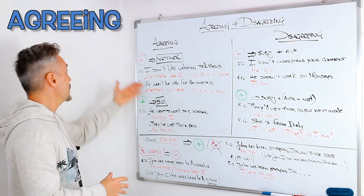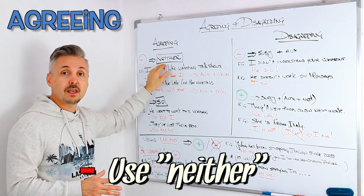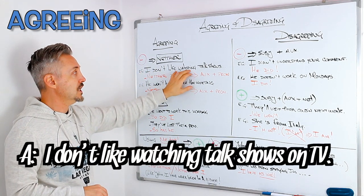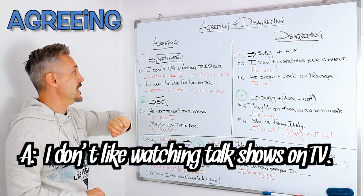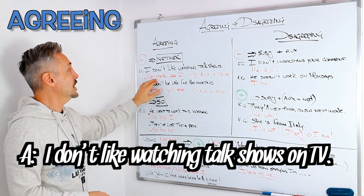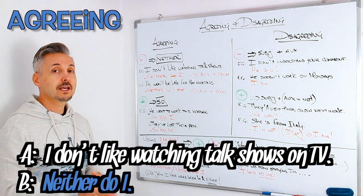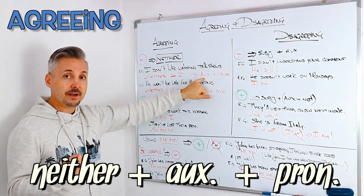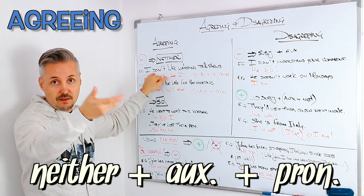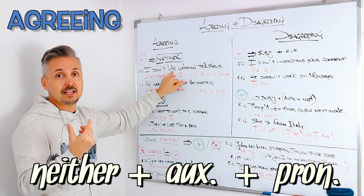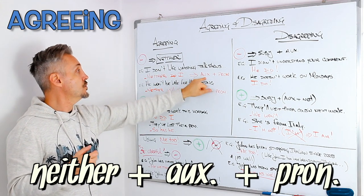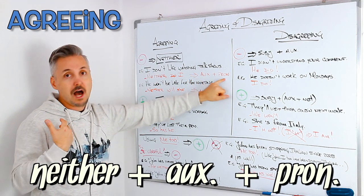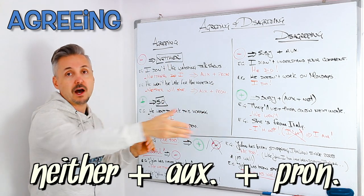Agreeing with a negative statement: we use 'neither' — it has two pronunciations, 'neither' or 'neither', you can choose. For example, 'I don't like watching talk shows on TV.' The other person would say 'Neither do I.' The formula is: neither + auxiliary of the original statement + subject or pronoun. So 'I don't like' gives the auxiliary 'do', making it 'neither do I' or 'neither does she', depending on who you're talking about.